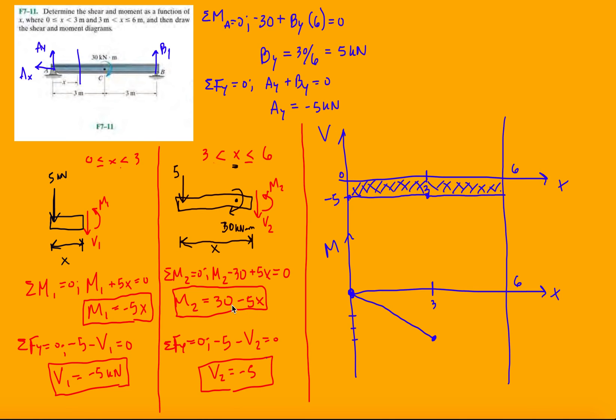Sweet, so that's the first half. Now let's look at it from 3 to 6. Evaluating this at 3, I get 30 minus 15, so it's positive 15 now. So you see how it jumps? It jumps because of this moment occurring at exactly 3 meters. So it makes the shear jump up to positive 15.